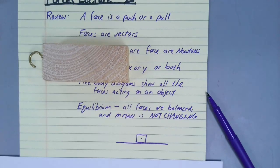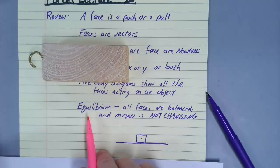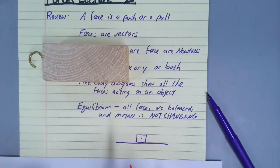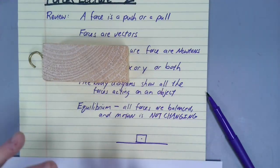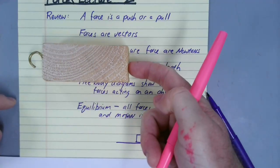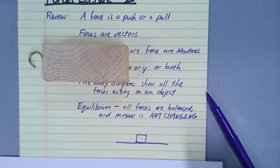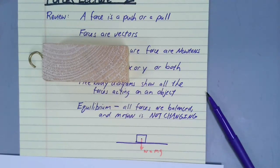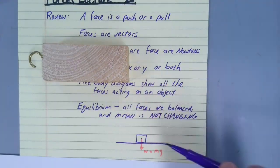We want to draw a free body diagram that shows us if an object is in equilibrium or not. To do that we need to show all of the forces to figure out which one is more or less, because that's going to predict which way the object will move. If you have more push or pull in one direction than the other, it's going to change its motion that direction. Consider our block — when I was pushing on it and it wasn't moving, first we have a weight force that always acts down.